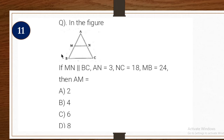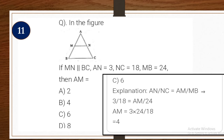Next one: in the figure, MN is parallel to BC. AN = 3, NC = 18, and MB = 24. Find AM. Options: A: 2, B: 4, C: 6, D: 8. Explanation using basic proportionality theorem: AN/NC = AM/MB, so 3/18 = AM/24, giving AM = 3 × 24/18 = 4. The correct answer is B.